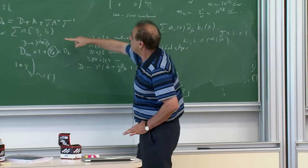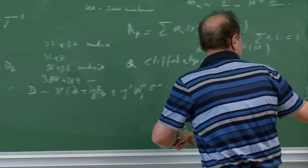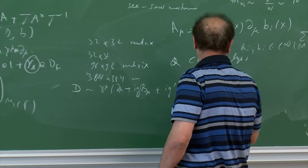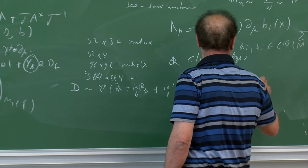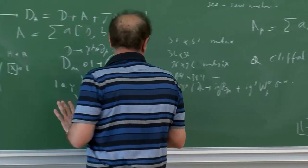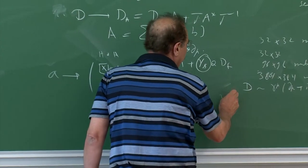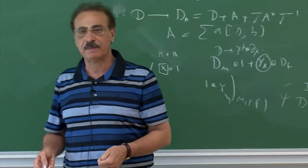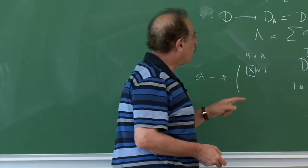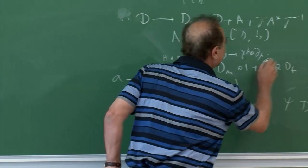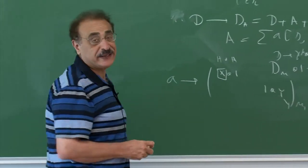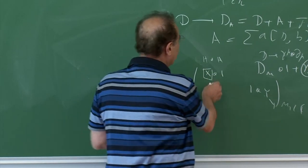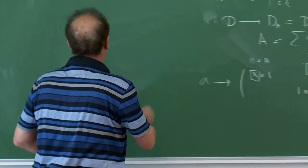In addition, because of the γ₅ ⊗ D_F tensoring, one also gets Higgs fields — nothing but the connections along discrete directions. In a simple 2×2 example with diagonal (A_μ, B_μ) gauge fields, the off-diagonal elements in D_A are scalar fields H and H*, because the diagonal is with γ^μ and the off-diagonal is with γ₅.